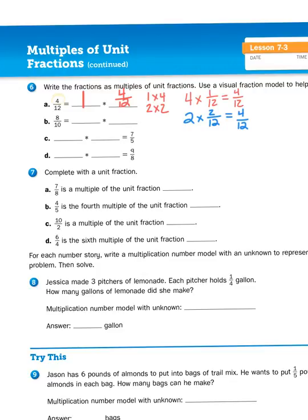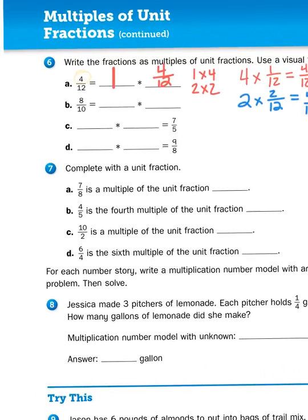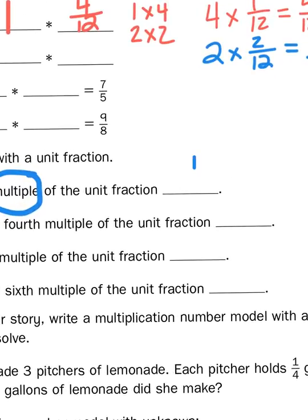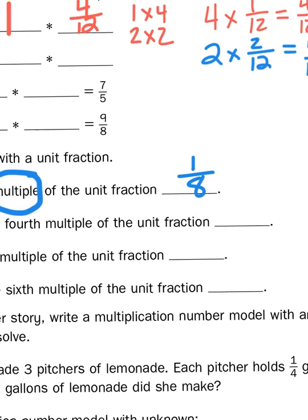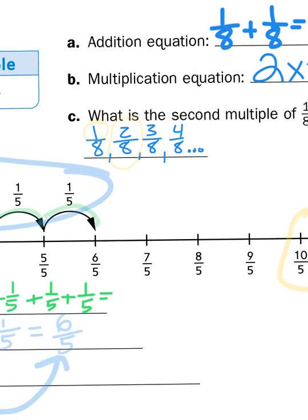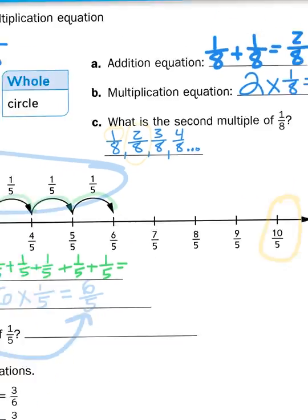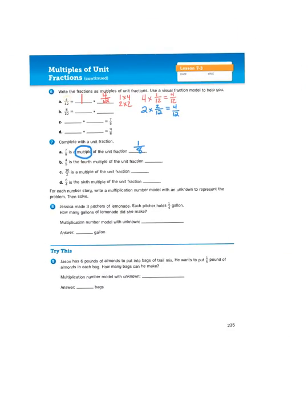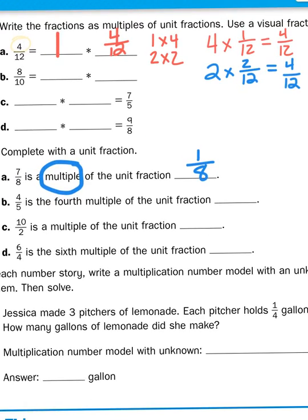So, down here, at problem number seven, it's asking us the question, what is the multiple of the unit fraction? So, if I'm skip counting by eighths, and seven-eighths is a multiple, where's my starting point? So, I would start with one-eighth, because just like we did on page 234, I skip counted by eighths. One-eighth, two-eighths, three-eighths, four-eighths, and so on. If I continued that trend, I would eventually hit seven-eighths.